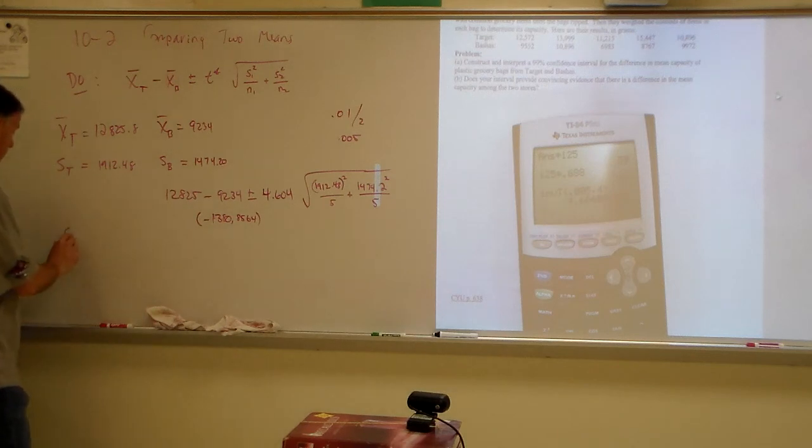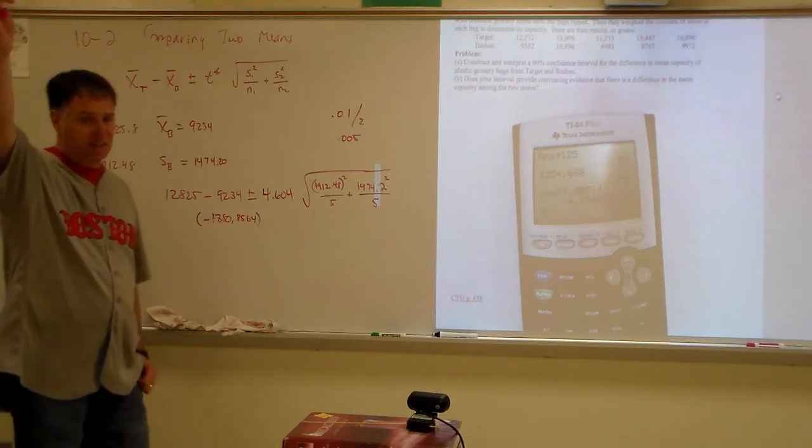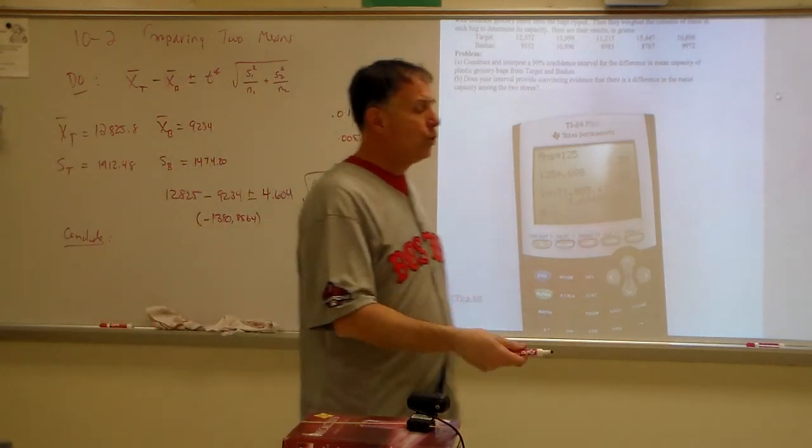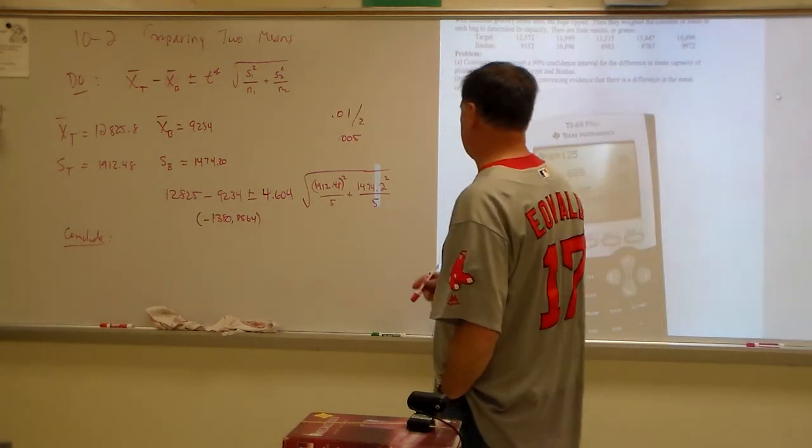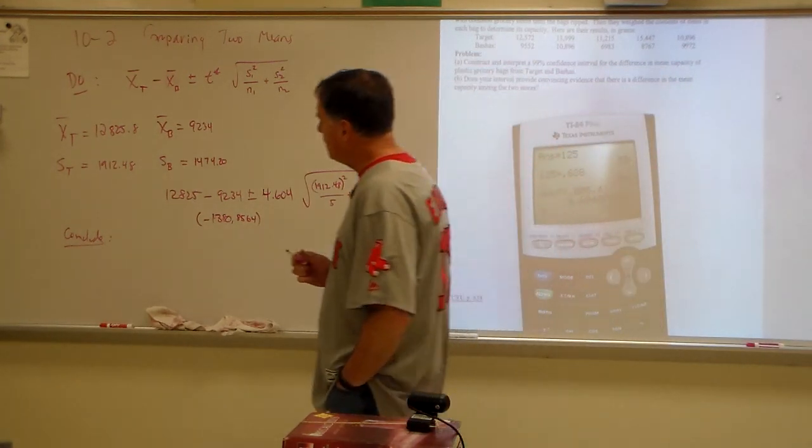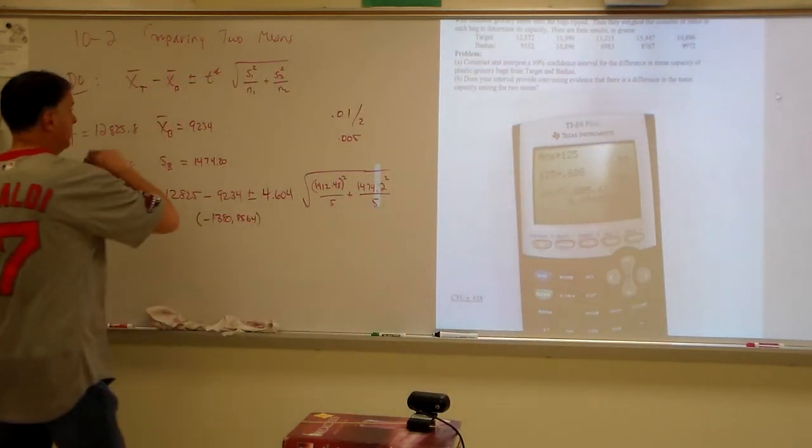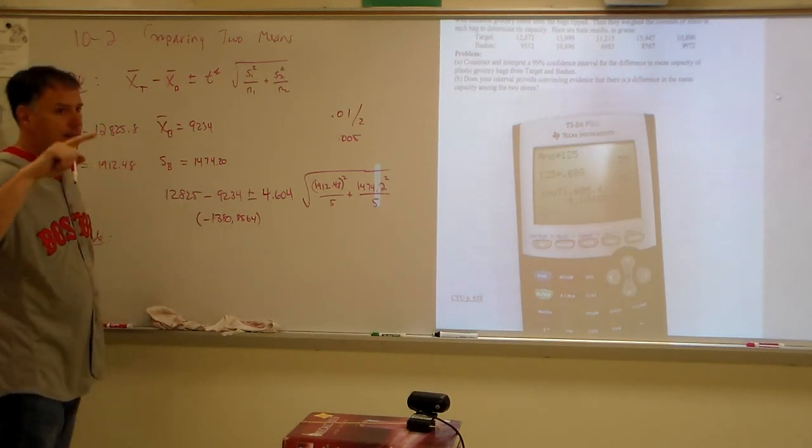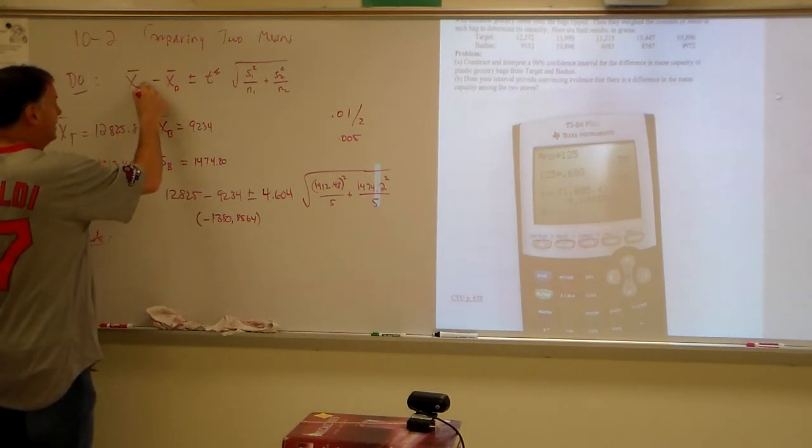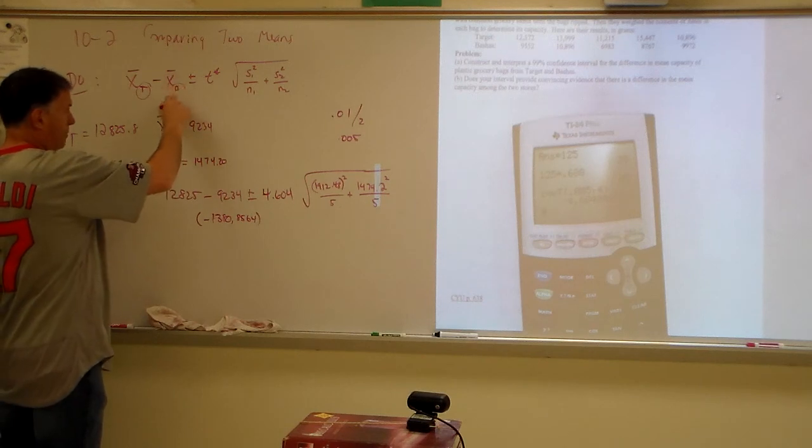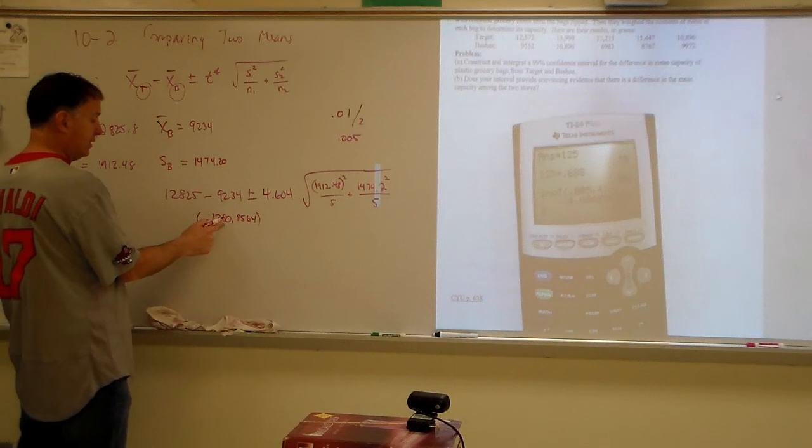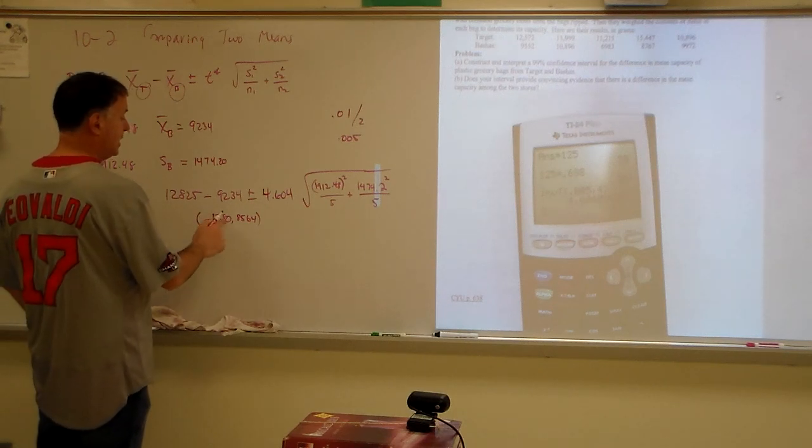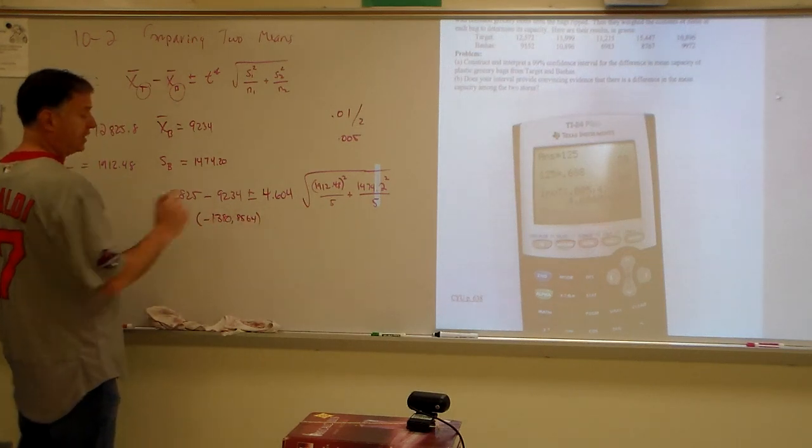So, to conclude, ready? Just listen. I'll read it slowly. We are 99% confident that the true mean difference between the bags, grocery bags, the capacity of the grocery bags at Target, and the grocery bags at Bashes is captured in the interval from negative 1,380 to 8,564.